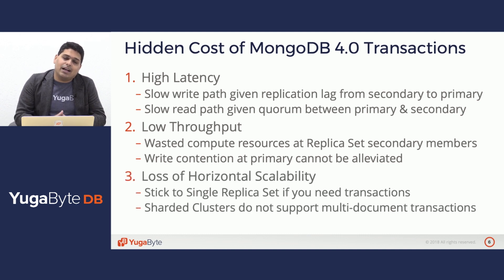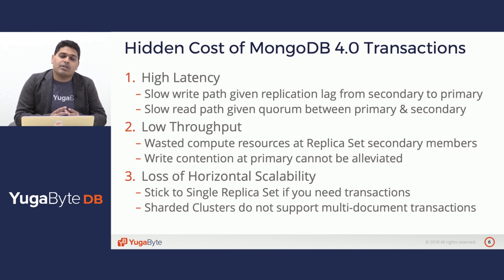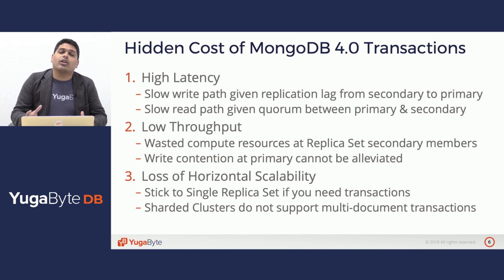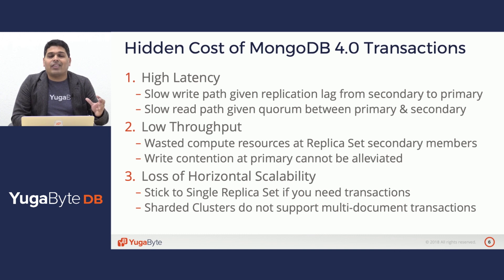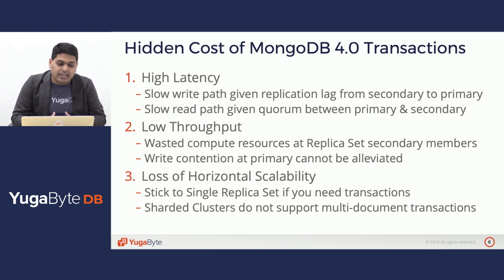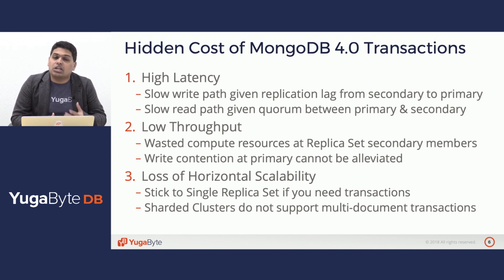Last but not the least, given the current design, you lose the ability to horizontally scale from a single replica set to a sharded cluster, because the moment you go to a sharded cluster, you cannot leverage ACID transactions and build a correct application on top of MongoDB. MongoDB sharded clusters still do not support multi-document transactions.